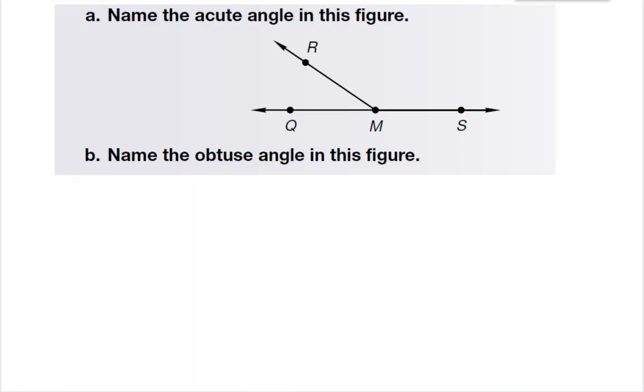So in this problem, it says name the acute angle in this figure. Now, I cannot just name it angle M, because both of these angles could be called angle M. So I need to name it by three letters. Now remember, an acute angle is less than a right angle, and a right angle would look kind of like this. So I'm looking for something that's less than a right angle.